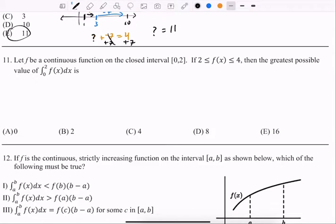Number 11. Okay, so number 11 says: let f be a continuous function on the closed interval from 0 to 2. If f is greater than 2 but less than 4, then what's the greatest possible value of this integral?